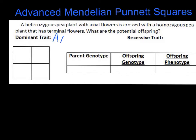Then it says we've got a homozygous pea plant that has terminal flowers. There are two options for homozygous: it's either homozygous dominant, meaning it has two dominant alleles, or it's homozygous recessive, meaning it gets a recessive allele from both parents. We can tell that this one is homozygous recessive because its flowers are terminal. If it was homozygous dominant, it would have axial flowers, because we figured out from the heterozygous one that axial is the dominant trait. So we know the recessive trait is terminal.